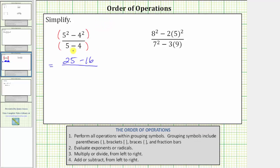Now looking at the denominator, five minus four equals one. Going back up to the numerator, 25 minus 16 equals nine. The expression simplifies to nine over one, which is equivalent to nine divided by one, which equals nine.